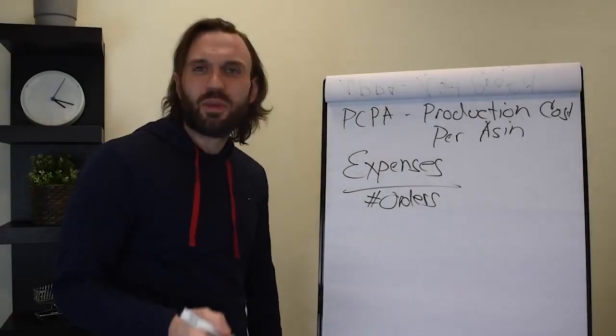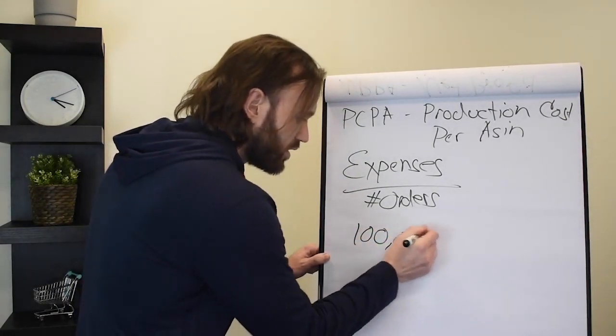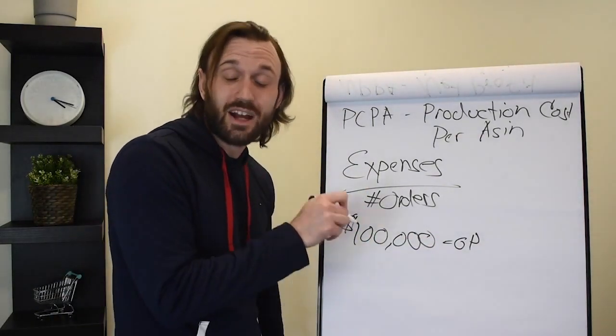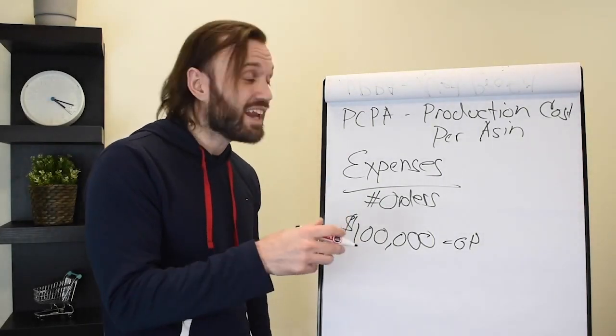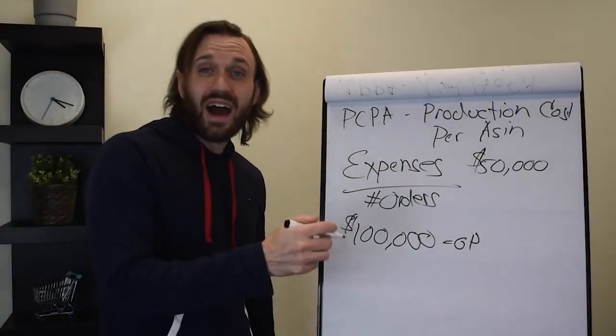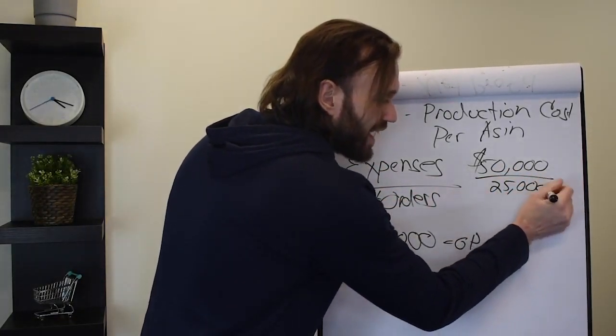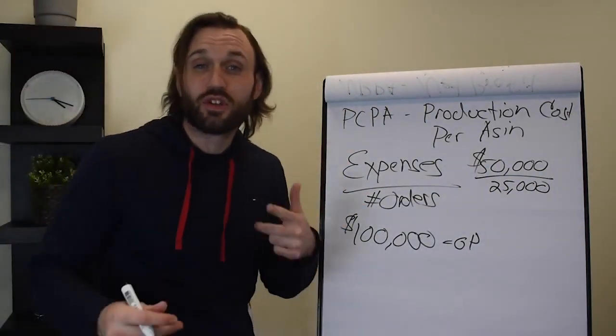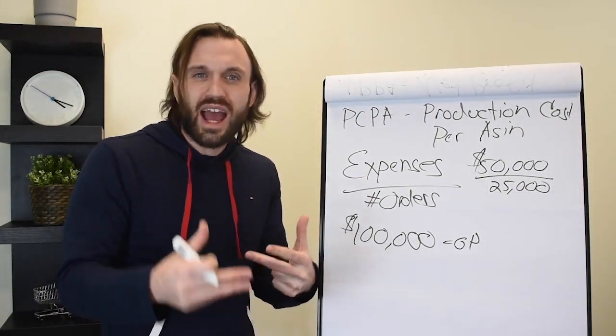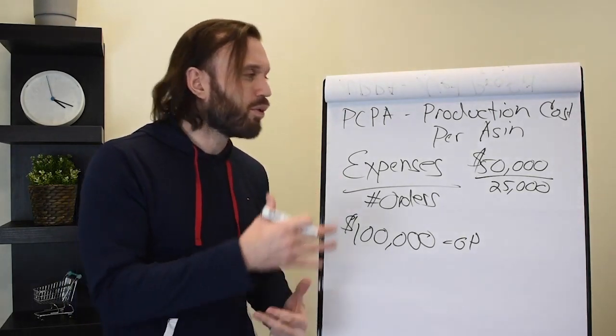In order to calculate your PCPA or production cost per ASIN, you would take your expenses and divide them by that same number of orders. Let's say your expenses to make that gross profit we talked about of $100,000—so that was our gross profit, our GP was $100,000—in order for us to make that gross profit of $100,000, we had to expense or spend in expenses $50,000. You would divide that $50,000 by that same 25,000 orders, and you would get your PCPA, your production cost per ASIN. What it costs you to get the product out the door, adding up all your expenses and dividing it by the amount of orders you sell that month or those 30 days.